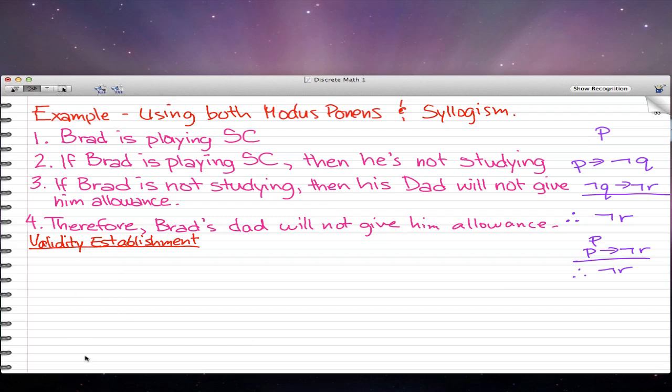Let's just go through that in more detail. Using validity establishment, here's one method of finding it. First we have P implies not Q. That is a premise, one of our hypotheses. That is a premise. And secondly, not Q implies not R. That is also a premise.